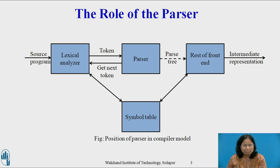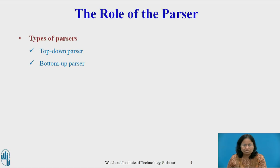In the compiler model, the parser obtains a string of tokens from the lexical analyzer, as shown in the figure, and verifies that the string can be generated by the grammar for the source language. The parser works on a stream of tokens. It should recover from commonly occurring errors so that it can continue processing the remainder of its input. The methods commonly used in compilers are classified as either top-down or bottom-up. Top-down parser builds the parse tree from top to bottom, while bottom-up parser starts from the leaves and works up to the root.